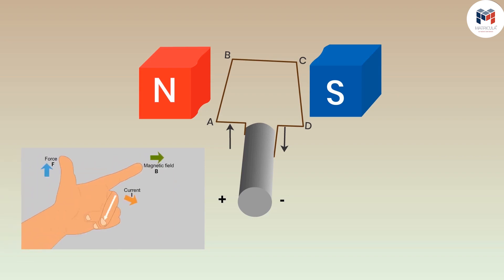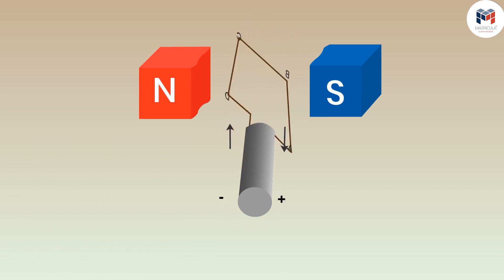The current is flowing in the outward direction on CD then the force will be exerted in the upwards direction. If you look into the motion then due to force acting on both the arms of the coil it starts rotating.